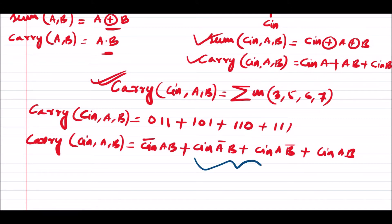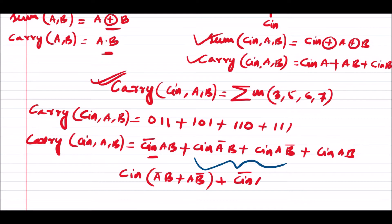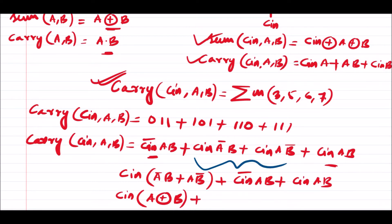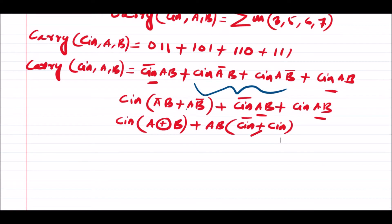Taking Cin common from the first two grouped terms gives us Cin·(A_complement·B + A·B_complement). The remaining terms are Cin_complement·A·B and Cin·A·B. Taking AB common from those last two terms gives AB·(Cin_complement + Cin). Since Cin_complement + Cin is always equal to 1, that simplifies to just A·B.